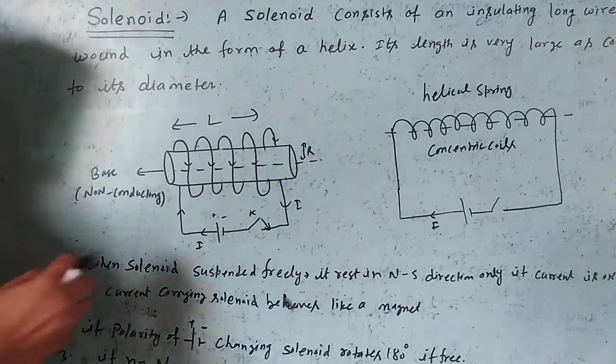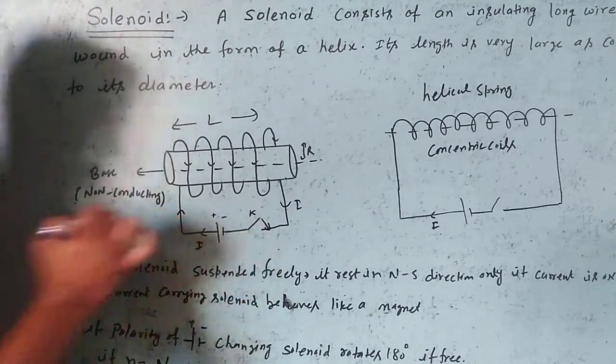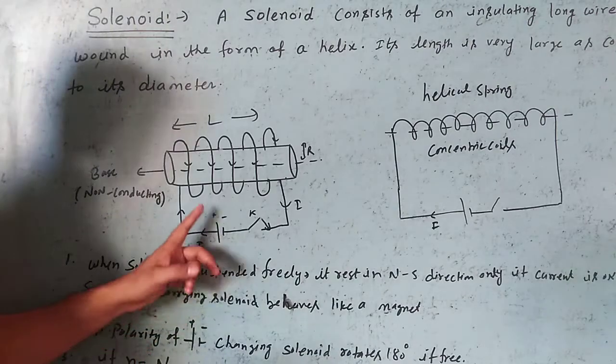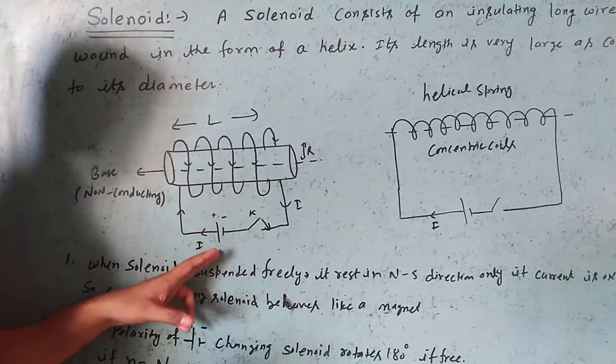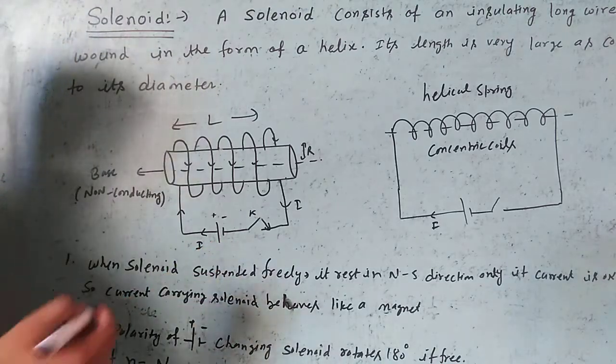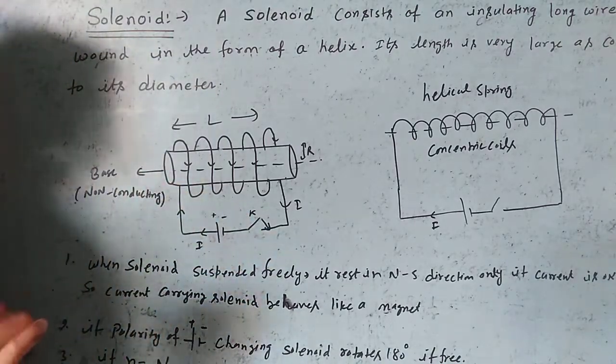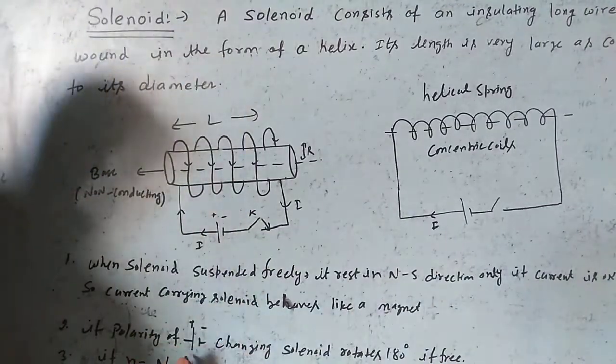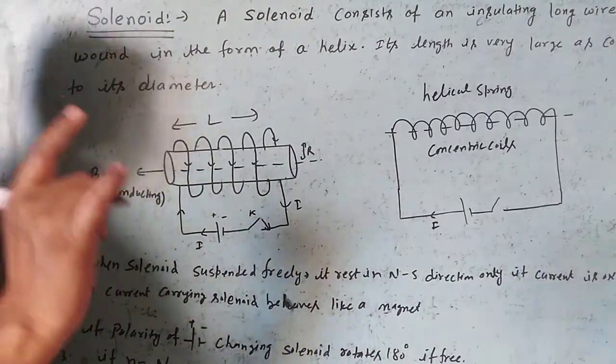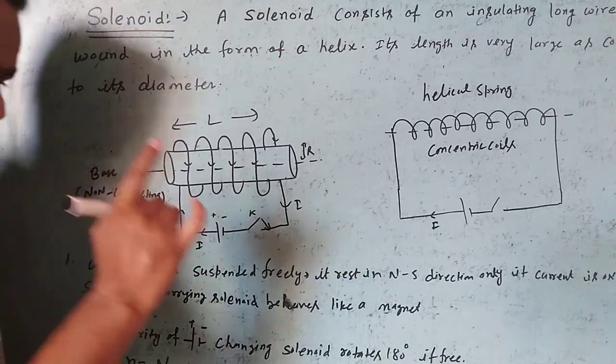If the polarity of the magnet is reversed or changed, the polarity of the solenoid also changes, and the solenoid rotates.